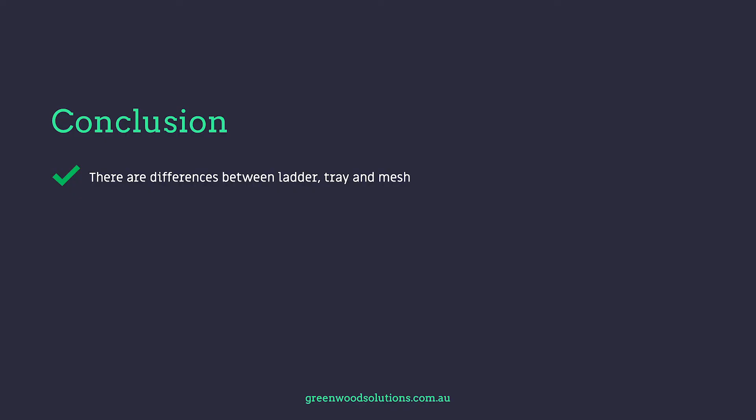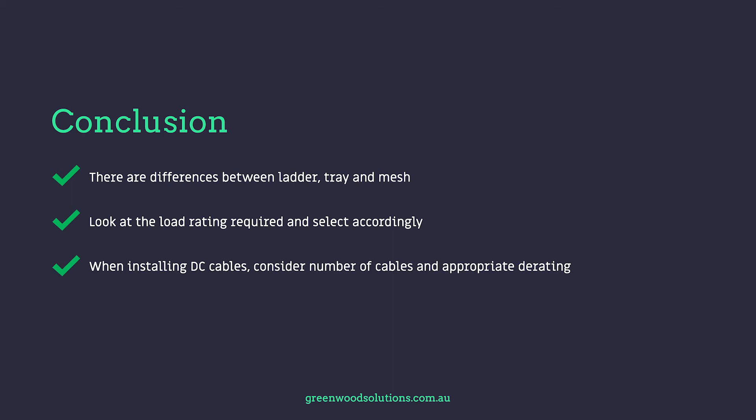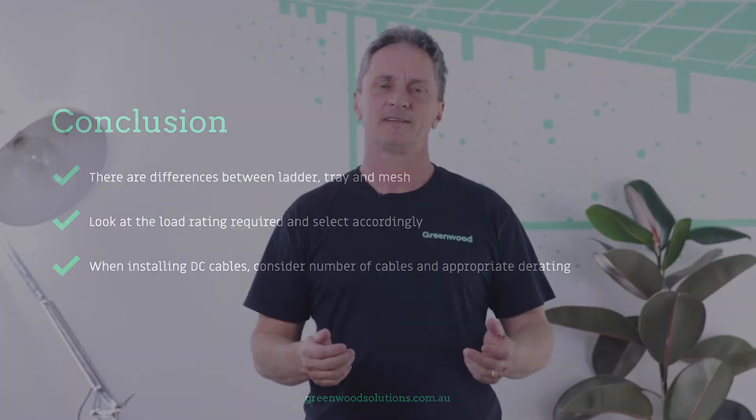In conclusion, there are large differences between cable ladder, cable tray, and cable mesh. Look at the load ratings required and select your tray accordingly. When installing DC and AC cabling, be very aware that derating is required when you start putting cables together, and derate accordingly. Thanks very much for watching. I'm Veli from Greenwood Solutions — please feel free to comment, ask questions, provide answers, and subscribe if you can.